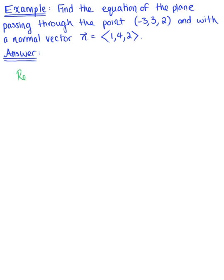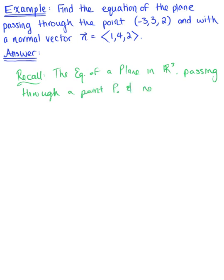To begin, let us recall that the equation of a plane in R³ passing through a point P₀ and normal to the vector n is defined by the dot product of the vector from P₀ to an arbitrary point P, dotted with the normal vector, equal to zero.